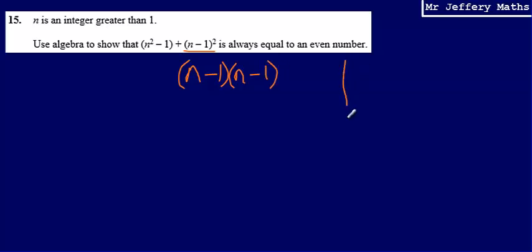We're going to expand that using the grid method. n minus 1 multiplied by n minus 1 gives us n²,